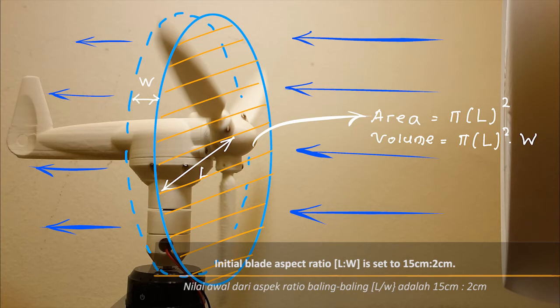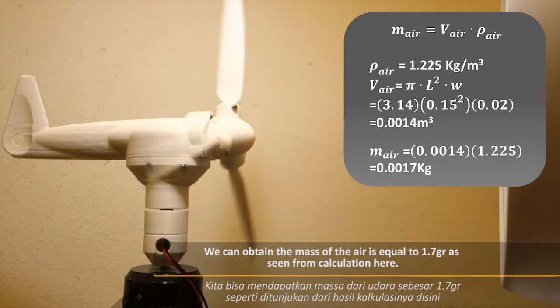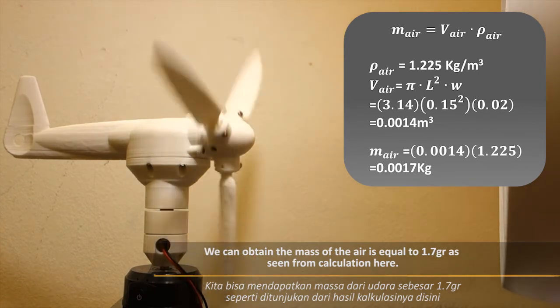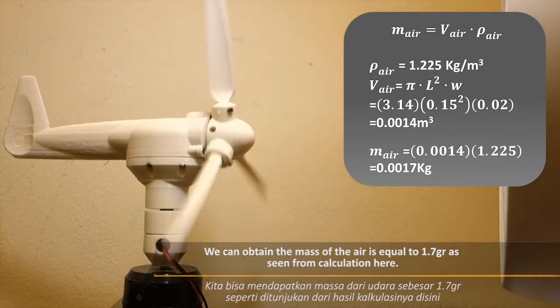Initial blade aspect ratio, L to W, is set to 15 to 2 cm. We can obtain the mass of the air is equal to 1.7 grams as seen from calculations here.